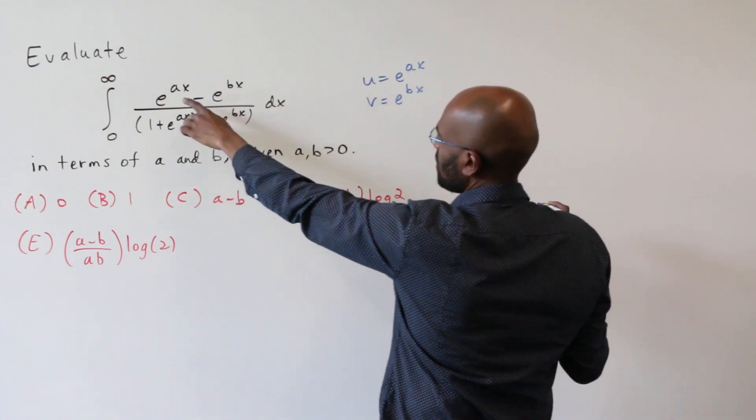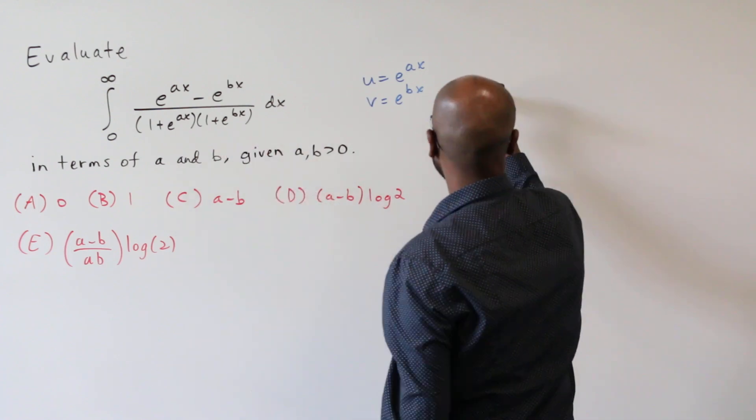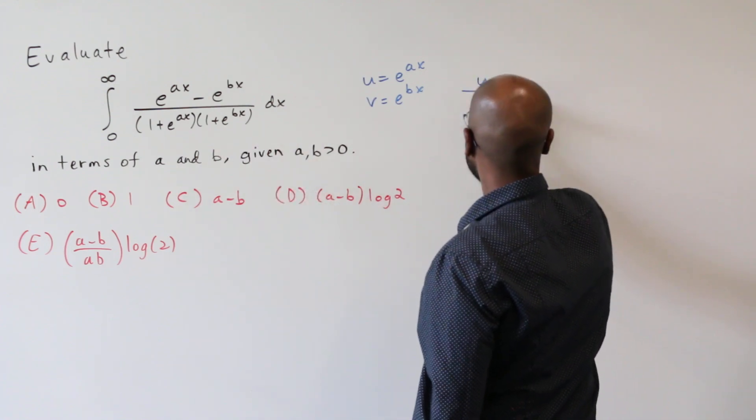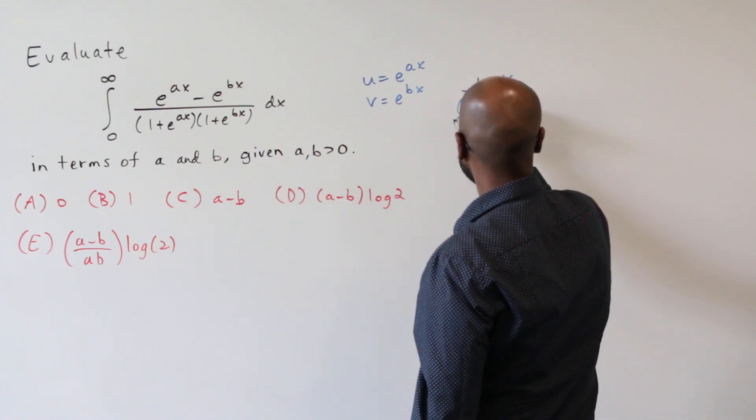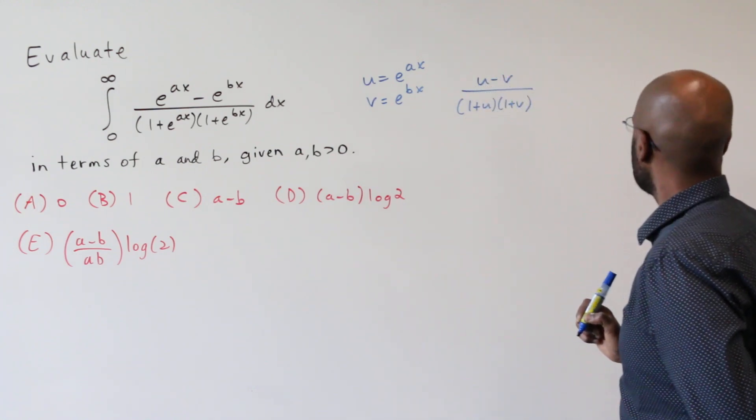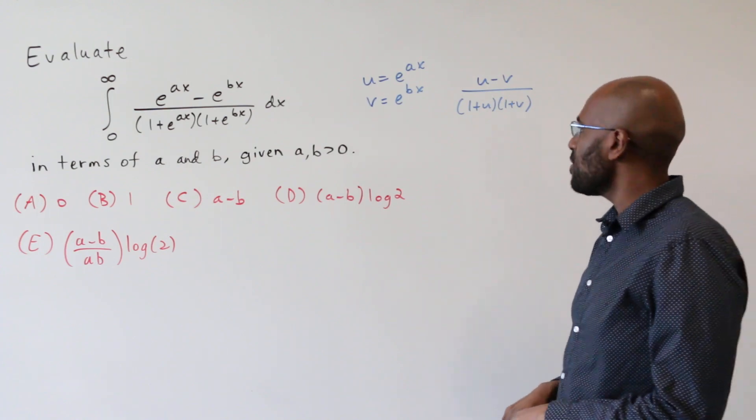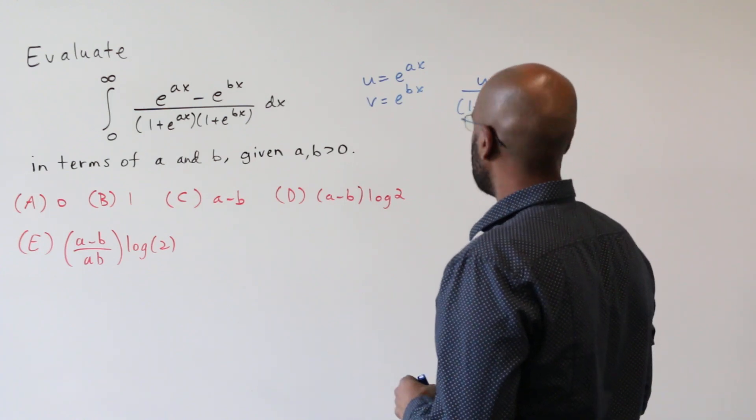Then this expression is u minus v over the quantity one plus u times the quantity one plus v. So maybe there's another way to rewrite this that'll make this a little bit more transparent or maybe more manageable to integrate.